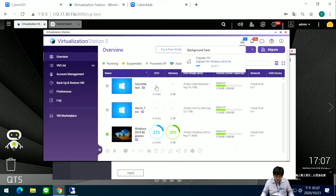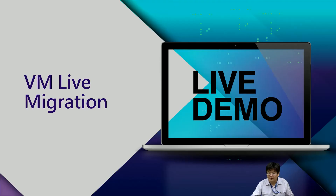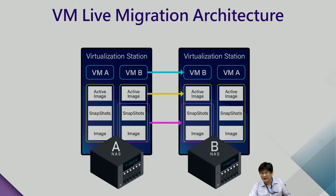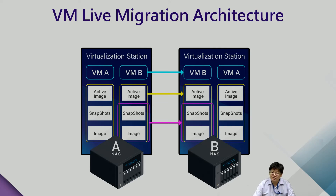In this situation we may need to wait about three minutes. Let's go back to the slide. The VM live migration architecture: first, migrate the snapshot and the image to NAS B, then migrate the active image to NAS B.